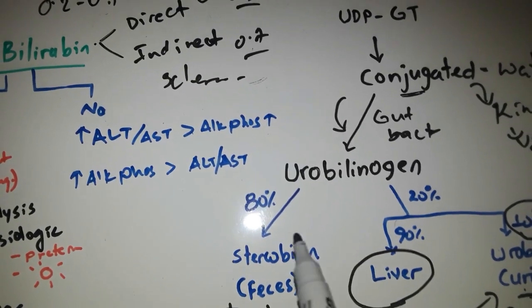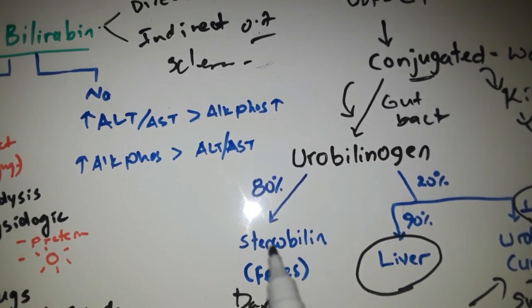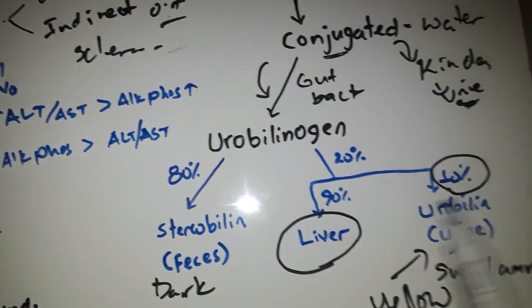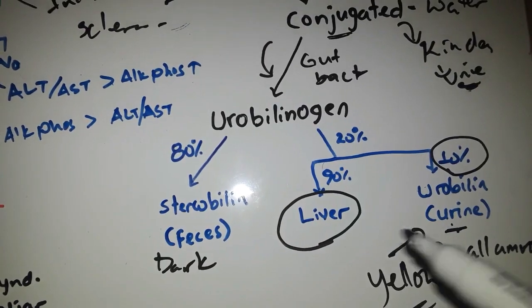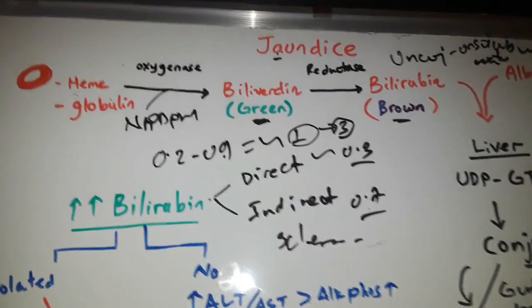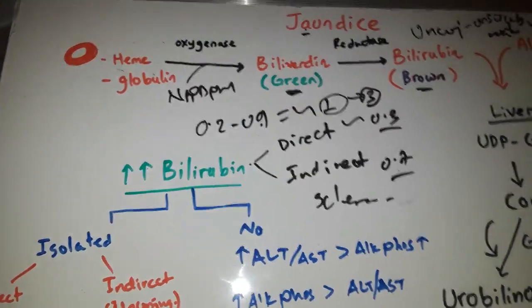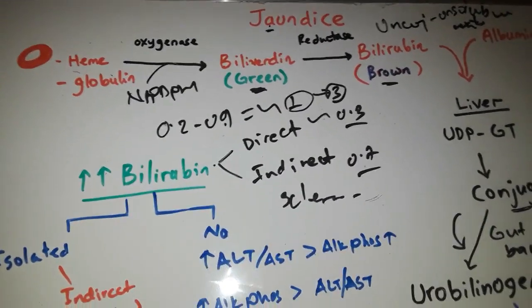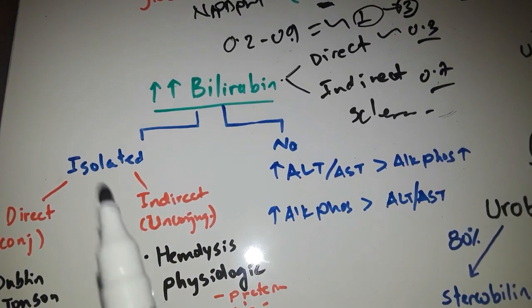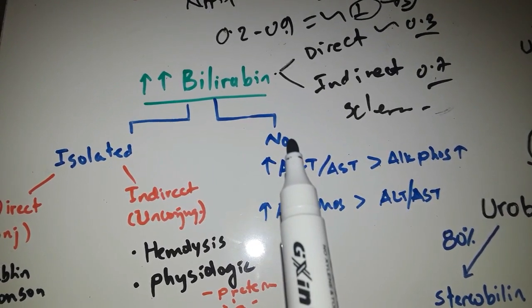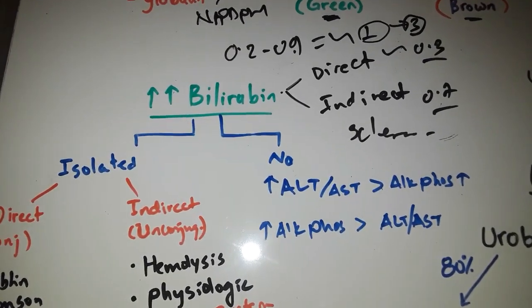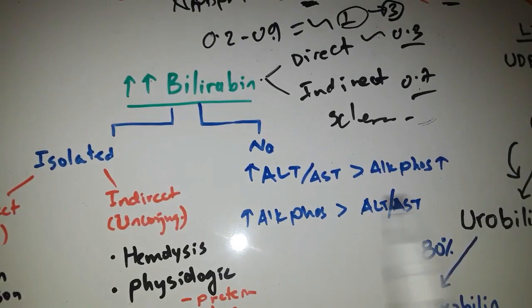Most of the stercobilin is excreted in the urine, and this is a yellow color material. If you understand the metabolism of bilirubin, you can understand what causes hyperbilirubinemia and it can be used to interpret liver function tests. This is called a cholestatic pattern.